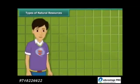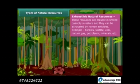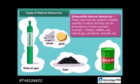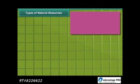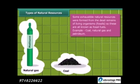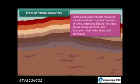On the other side, the amount of exhaustible resources is limited and they can be exhausted by human activities and consumption. Forests, wildlife, coal, natural gas, petroleum, and minerals are examples of these resources. Some exhaustible resources like coal, natural gas and petroleum were formed from the dead remains of living organisms called fossils, and hence these are also known as fossil fuels.